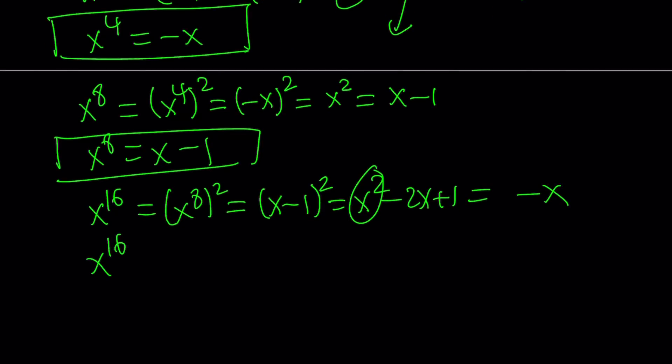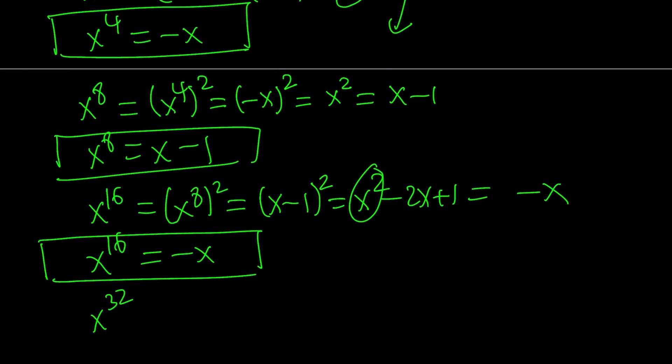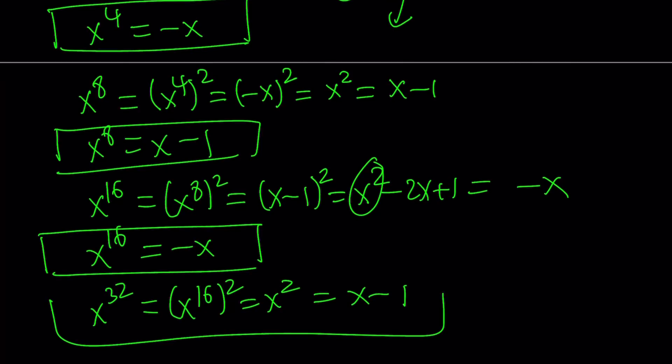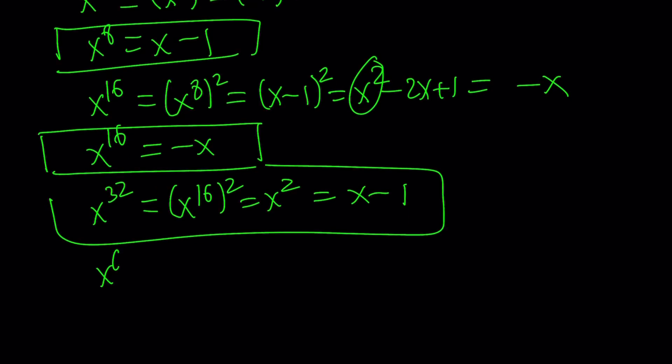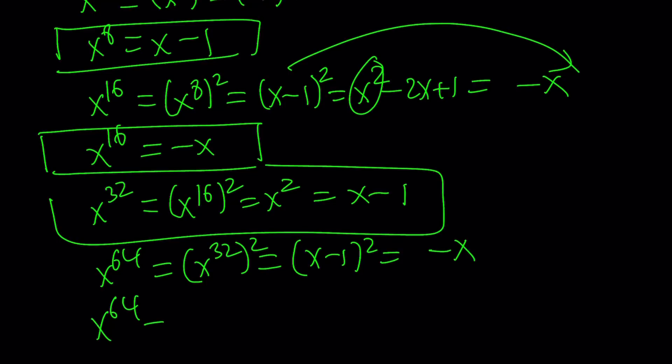So to keep a long story short, x to the power of 16 is negative x. x to the power of 32 is going to be x minus 1, so on and so forth. So instead of repeating this procedure over and over, we can safely say that x to the 32 is going to be x to the power of 16 squared, which is x squared, and that's x minus 1. And for x to the power of 64, we can just square this, and that's going to give us x minus 1 squared. And as you know, it is equal to negative x. So x to the power of 64 is negative x.